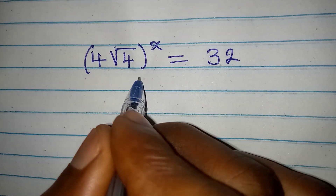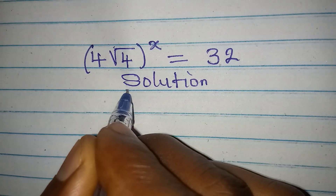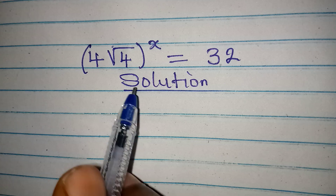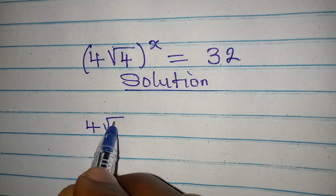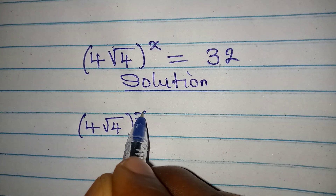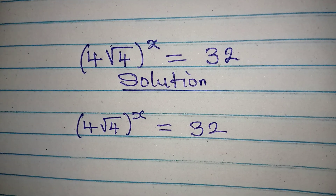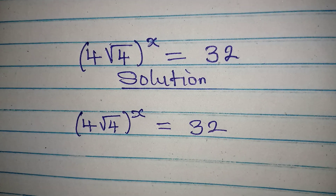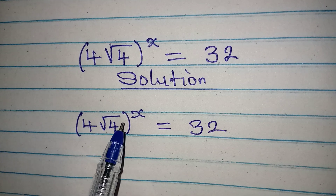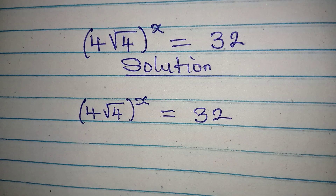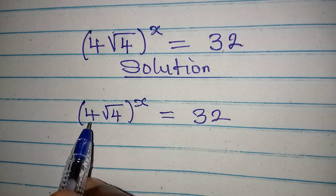Hello everyone. Let's work through the solution to this Olympiad mathematics problem. We have 4 times the square root of 4, raised to the power of x, equal to 32. You may not immediately be able to imagine the value of x, but let's see the full working to this problem.